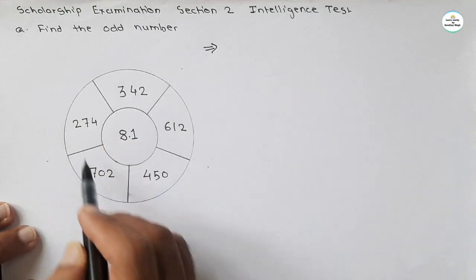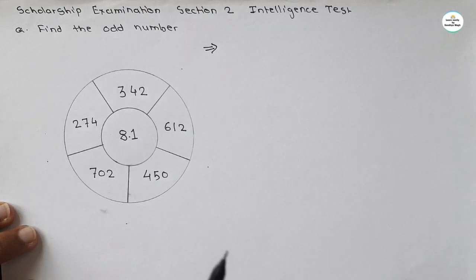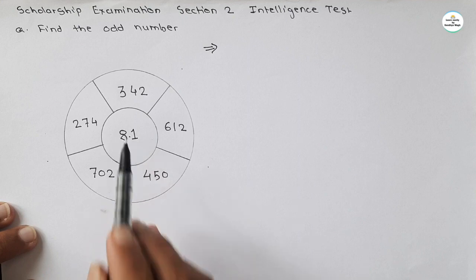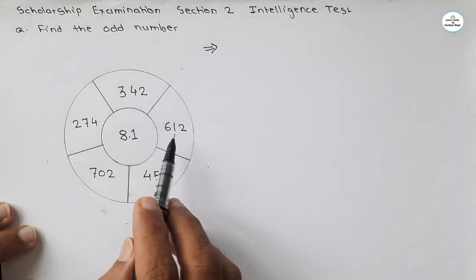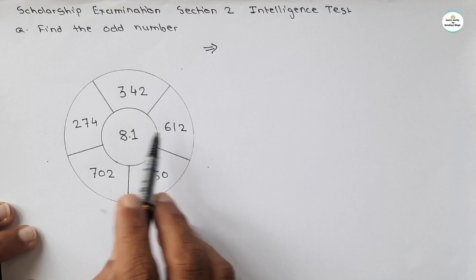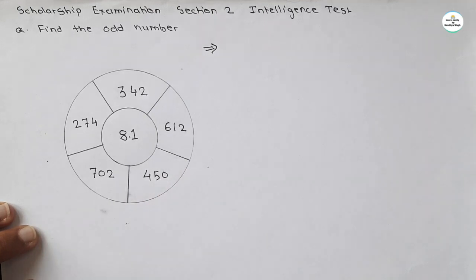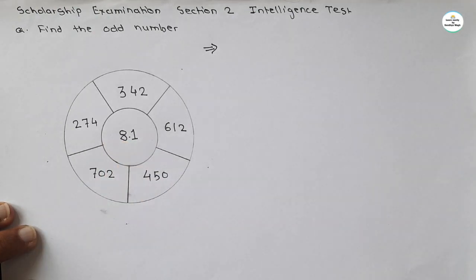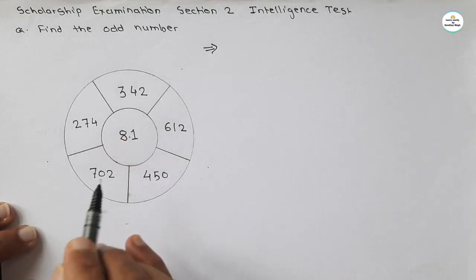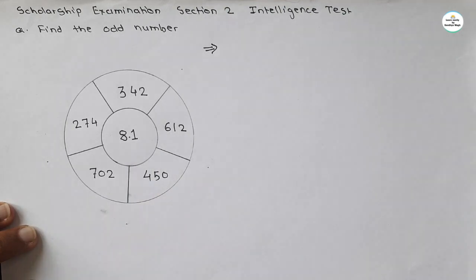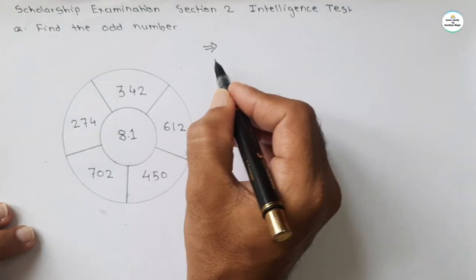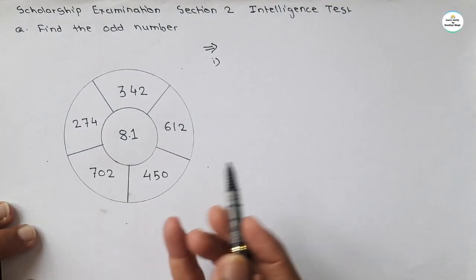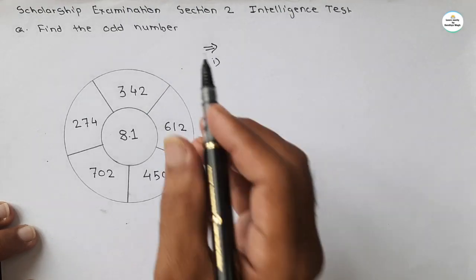Outside the circle, five numbers are given, and in the central circle the number 81 is given. One number is odd, meaning these numbers have some relation with the central number, but one number does not have that relation. We have to find the relation of these numbers with the central number.